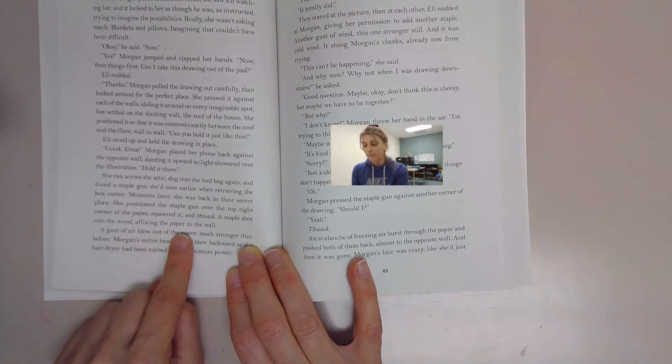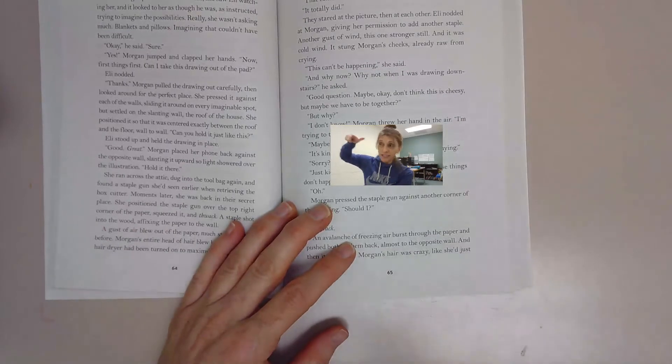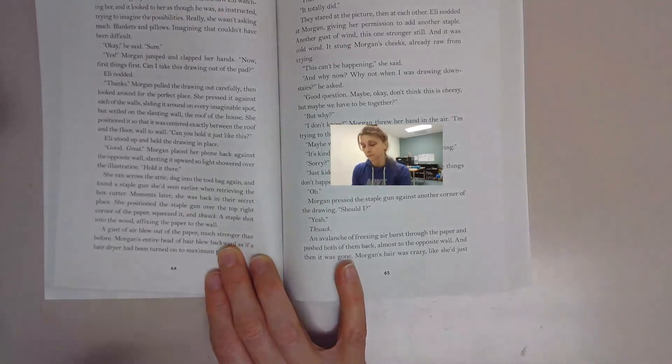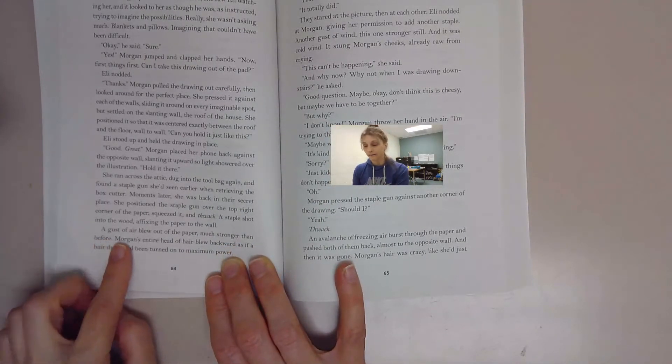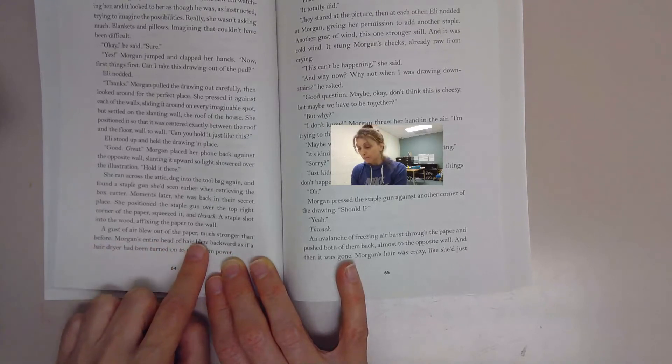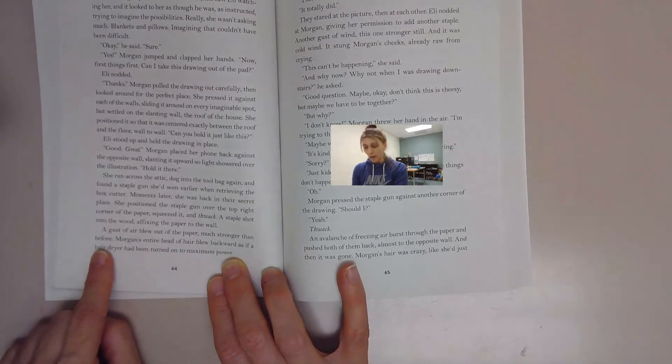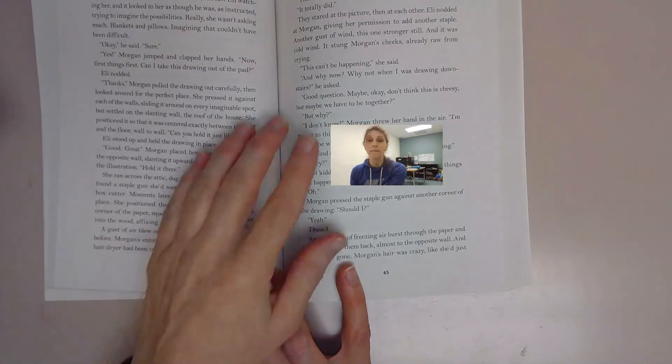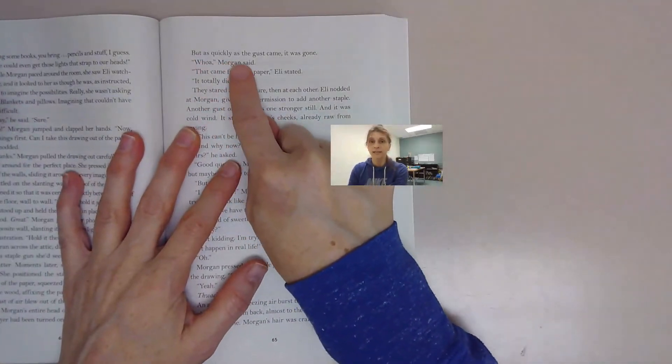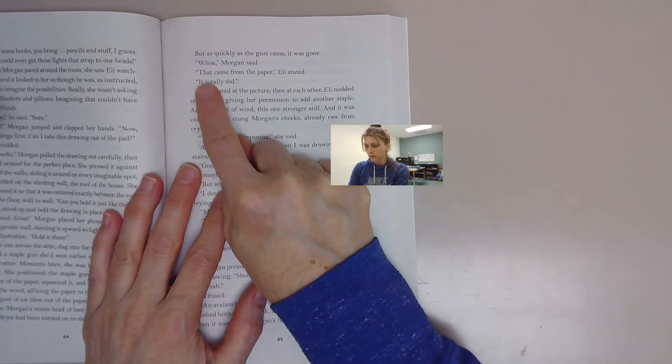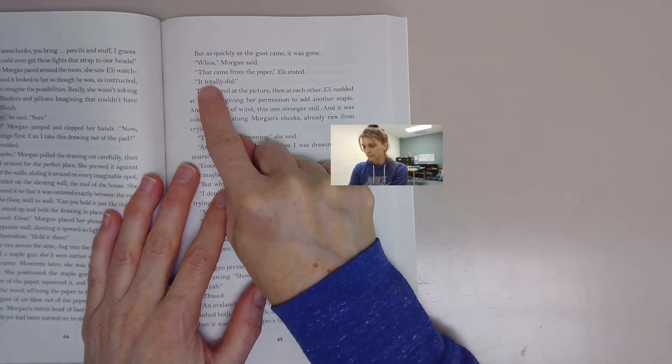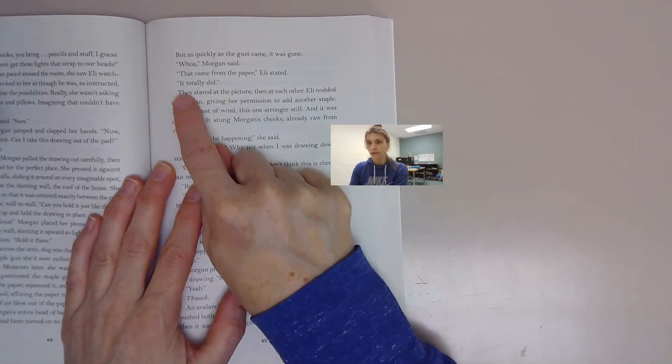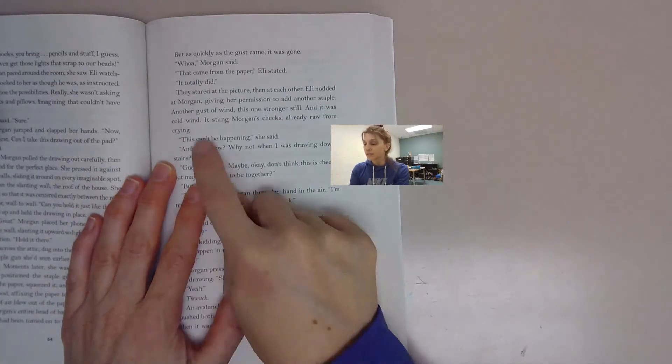She positioned the staple gun over the top right corner of the paper, squeezed it, and thwack, a staple shot into the wood affixing the paper to the wall. Okay, so Morgan has a staple gun and she's stapling this poster, this picture that Eli has drawn, into the wall. A gust of air blew out of the paper, much stronger than before. Morgan's entire head of hair blew backwards as if a hair dryer had been turned on to maximum power, but as quickly as the gust came it was gone.